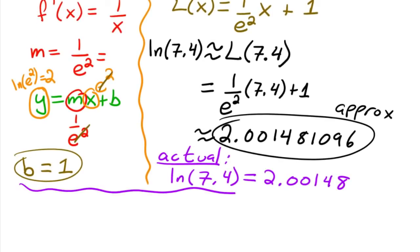The error is equal to—if you just find the absolute value of the approximation minus the actual—you would get 0.000001096.